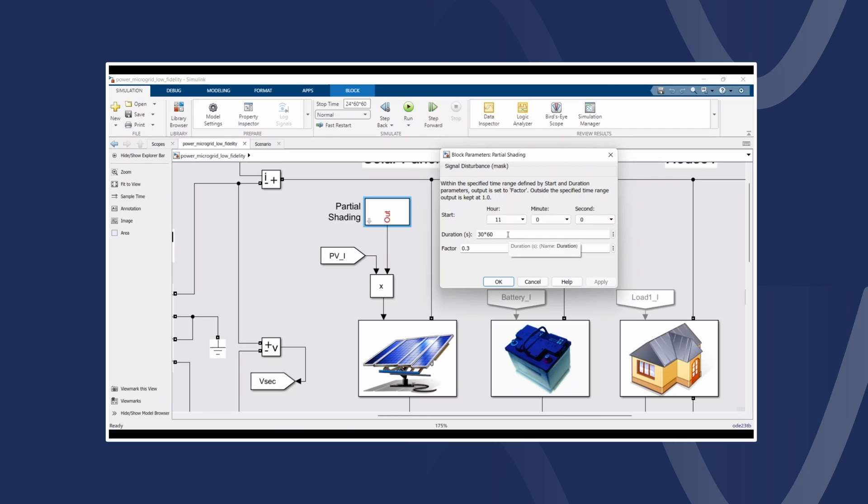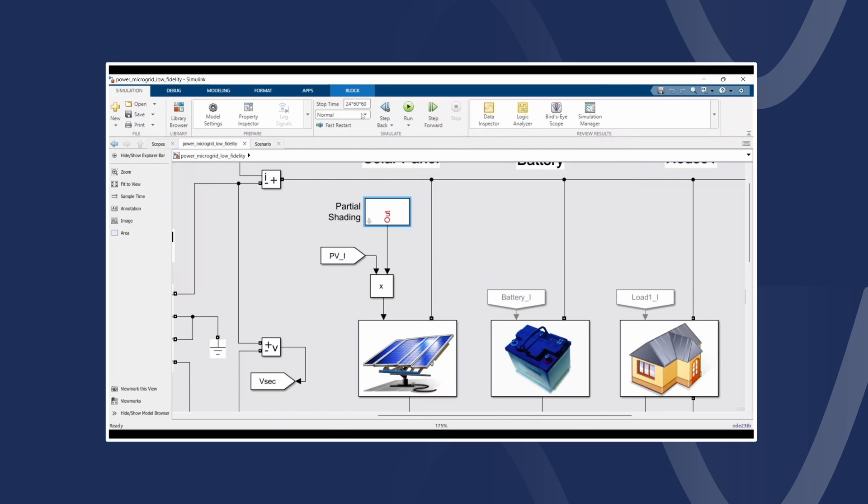But before we run the simulation, please also notice that we are simulating 24 hours of operation time in our microgrid systems. And once I click on the run button, you can see that it runs in a matter of seconds. From this we can conclude that our model runs really fast. This is because we have a low fidelity system level model now and with this we can obtain our results really quickly.